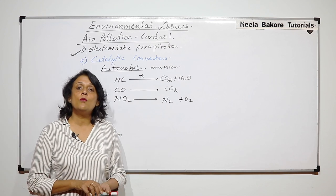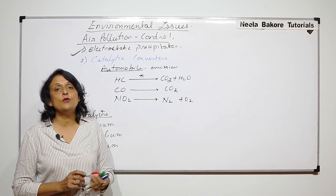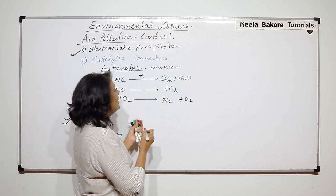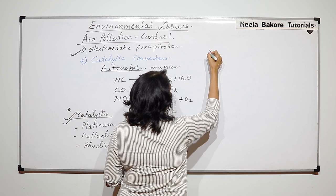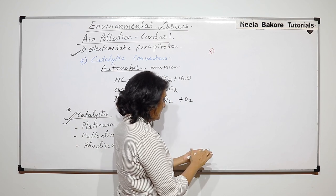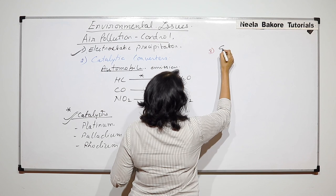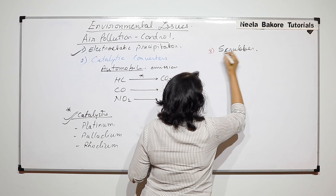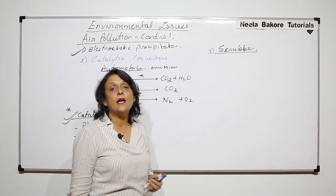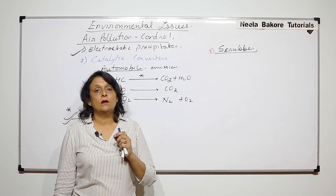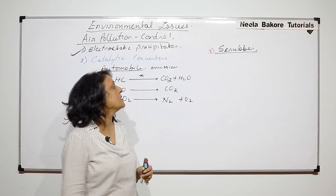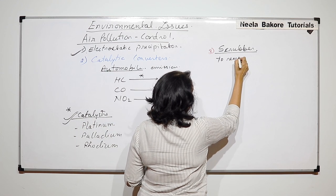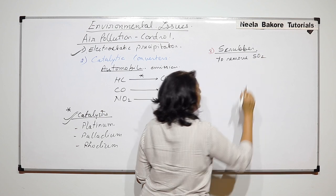Let us talk about one more device which is used to minimize air pollution. That device is the third one — it is called a scrubber. These scrubbers are used to remove certain gases, like sulfur dioxide.